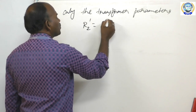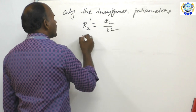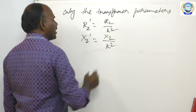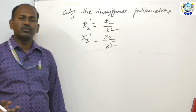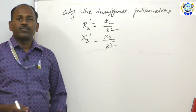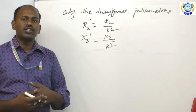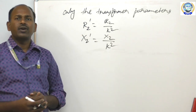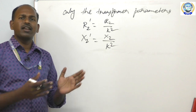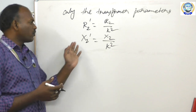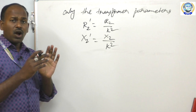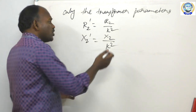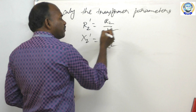R2 dash equals R2 by K square, X2 dash equals X2 by K square, Z2 dash equals Z2 by K square. Using the transformation ratio, we transform values from one side to either side. If you require values on the primary side, use this formula. If you want to move primary side values to the secondary side, multiply by K square.